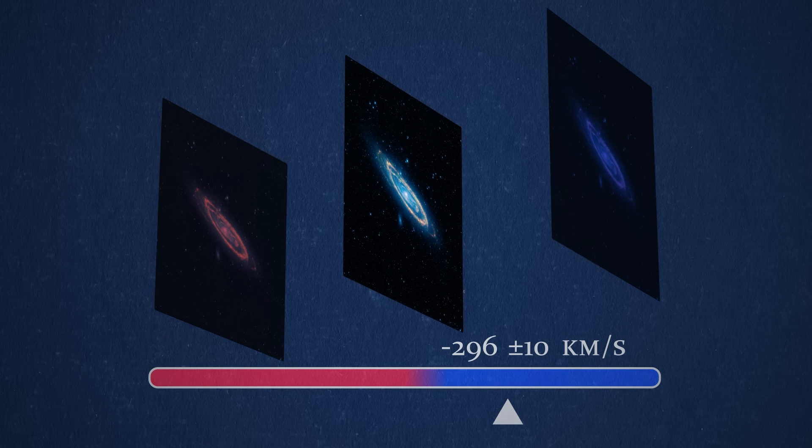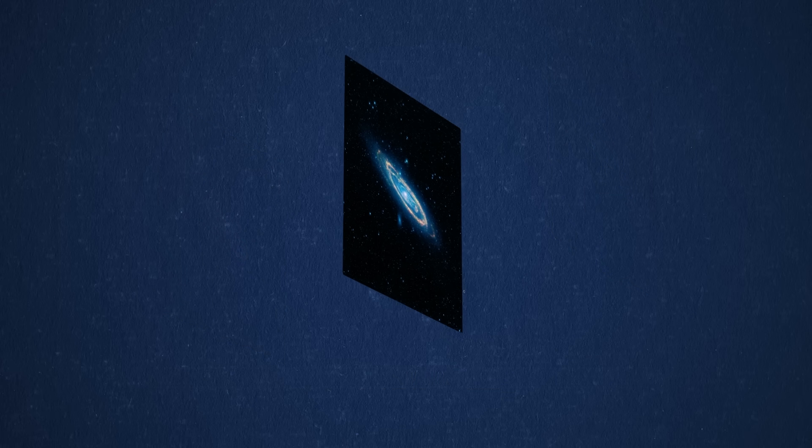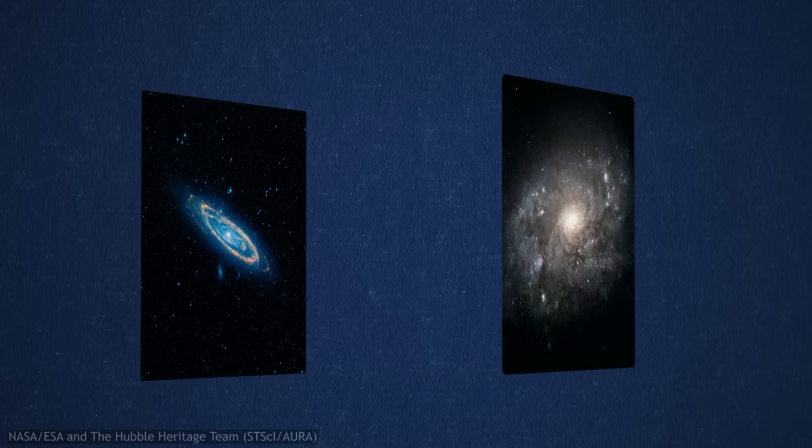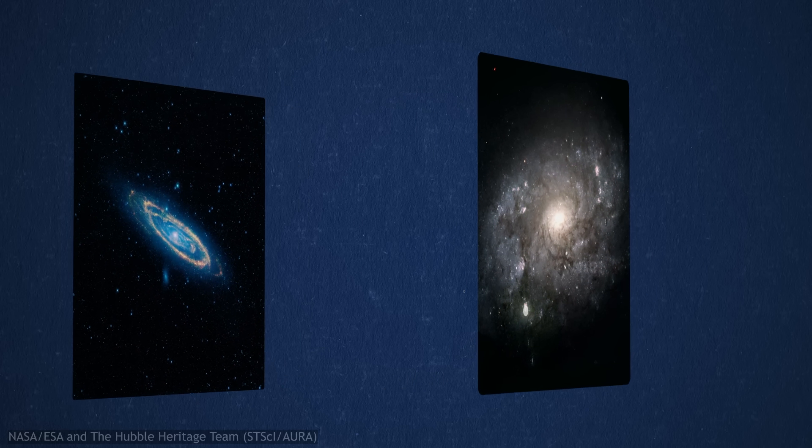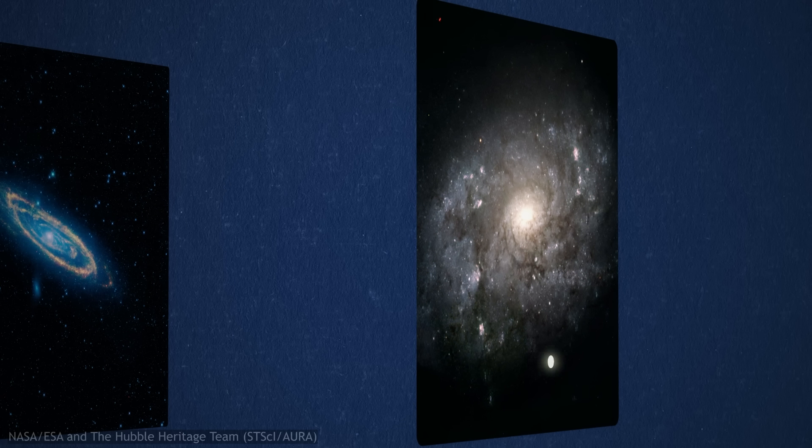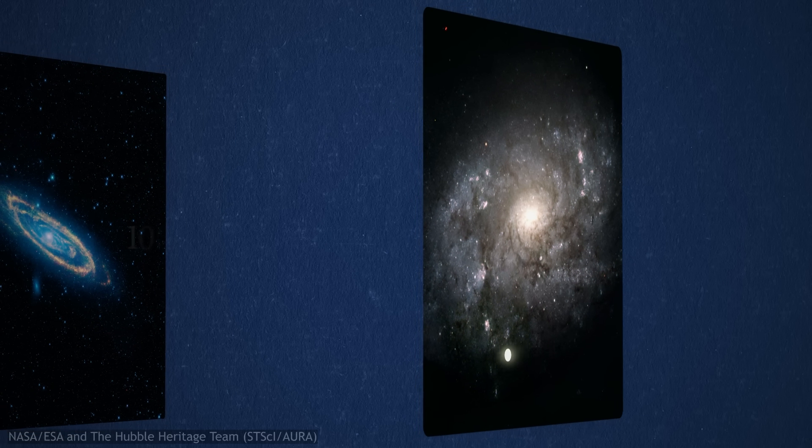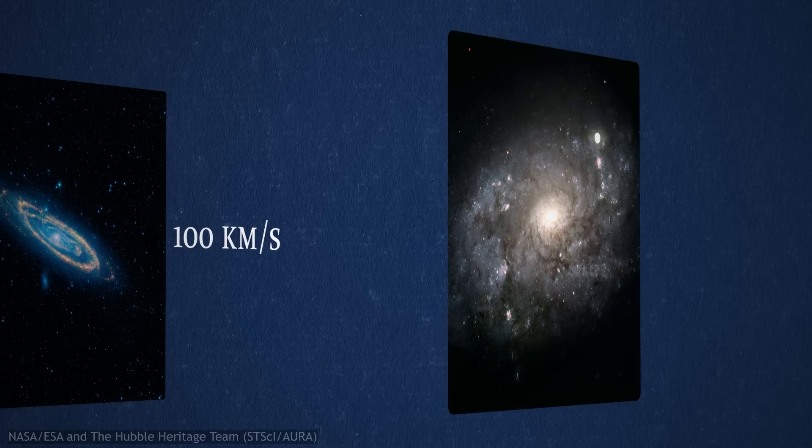But to further complicate matters, that measurement didn't just include the motion of our galaxies moving together, but also the movement of the Sun around the galactic center. That must be subtracted to give the true galactic motion, and that number is right around 100 km per second.